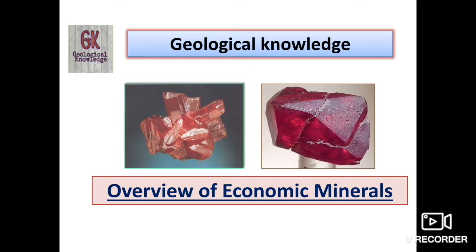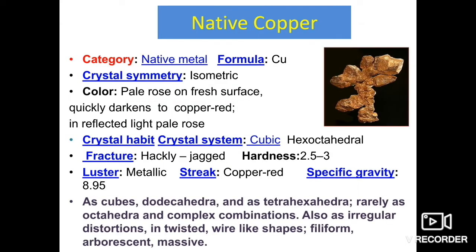Let's start our discussion. The first one is native copper. In this category there are some native metals which occur in isolation — these are the native metal category. The basic formula is Cu, and the crystal system is isometric.